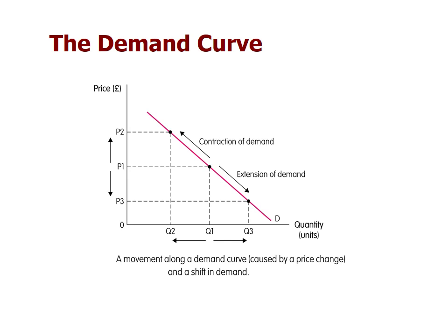When price increased from P1 to P2, quantity reduced from Q1 to Q2 — that is a contraction of demand. If price drops from P1 to P3, we have an extension of demand, so quantity increases from Q1 to Q3. This movement is always along the demand curve. Later I'll show you what a shift in demand looks like.